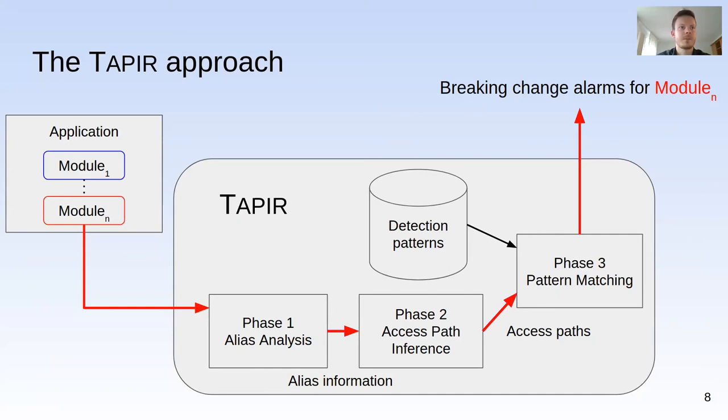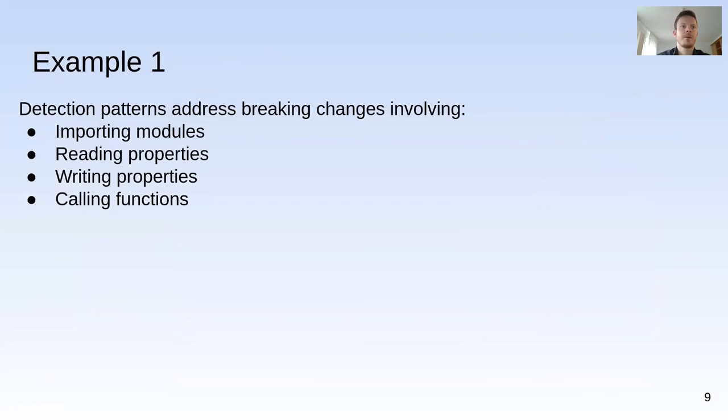Before describing Tapir's analysis, let's consider the detection pattern language. There are four types of patterns, each for addressing breaking changes in different API types: the import pattern for identifying module loads; the read and write patterns for identifying reads and writes to specific properties; and finally, the call pattern for identifying calls to specific functions.